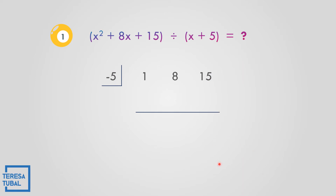Now we divide. Bring down 1. Then multiply: 1 times negative 5 is negative 5. Place it under 8. Then 8 minus 5 equals 3. Next, multiply 3 times negative 5, which is negative 15. Then 15 minus 15 equals 0.